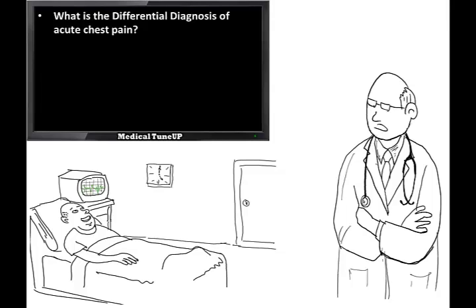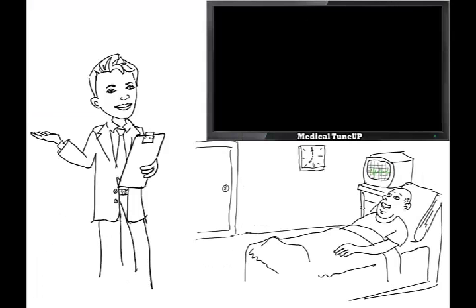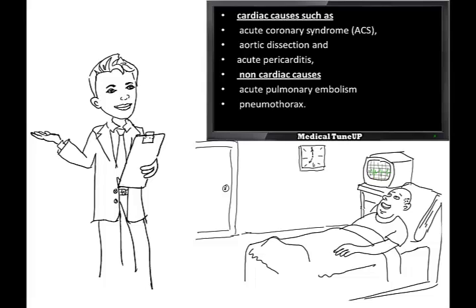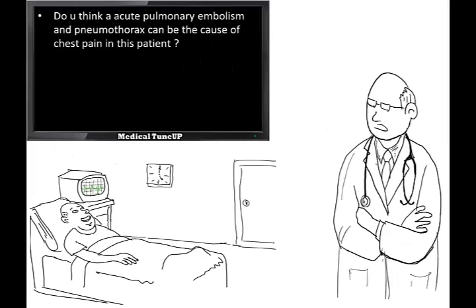So what's your differential diagnosis of acute chest pain? Acute chest pain may be because of cardiac causes such as acute coronary syndrome, aortic dissection, acute pericarditis, and as well as non-cardiac causes such as acute pulmonary embolism or pneumothorax. So do you think acute pulmonary embolism or pneumothorax can be the cause of chest pain in this patient?